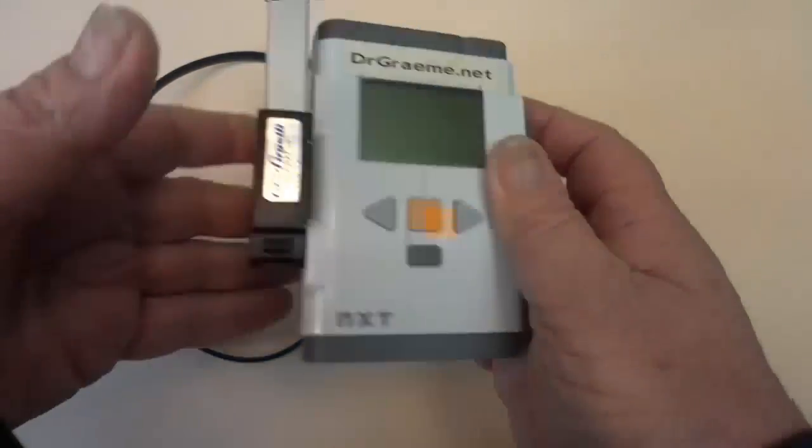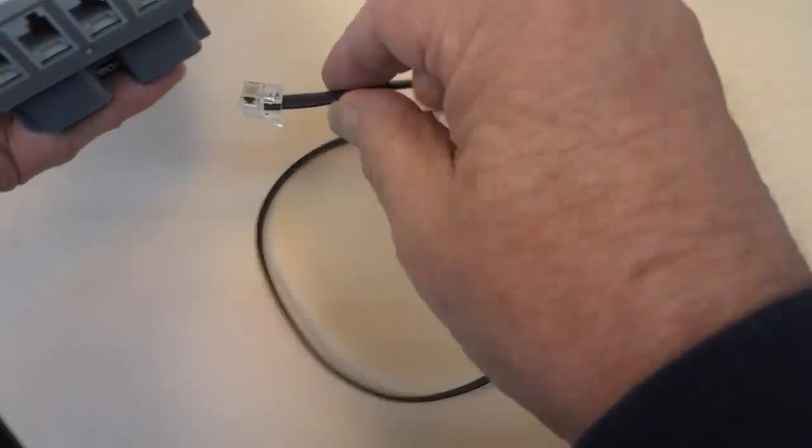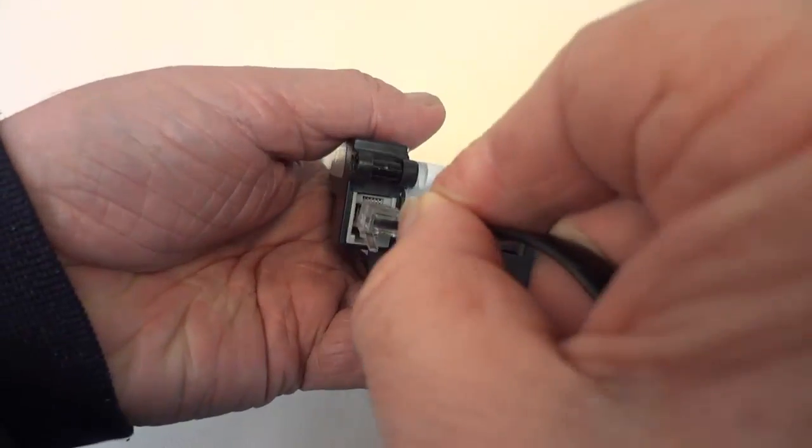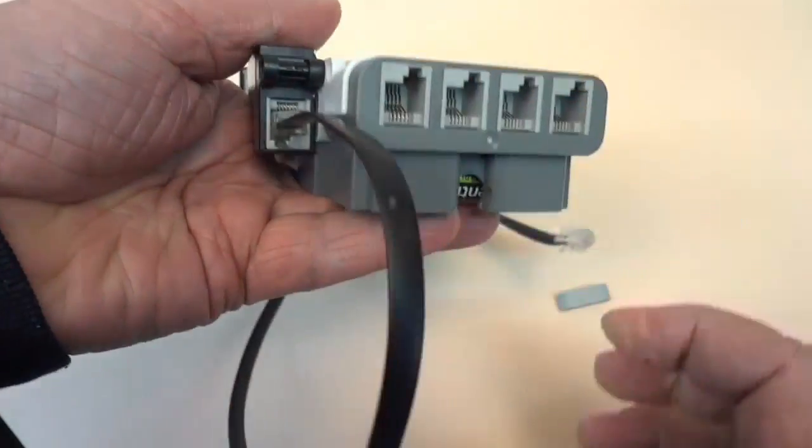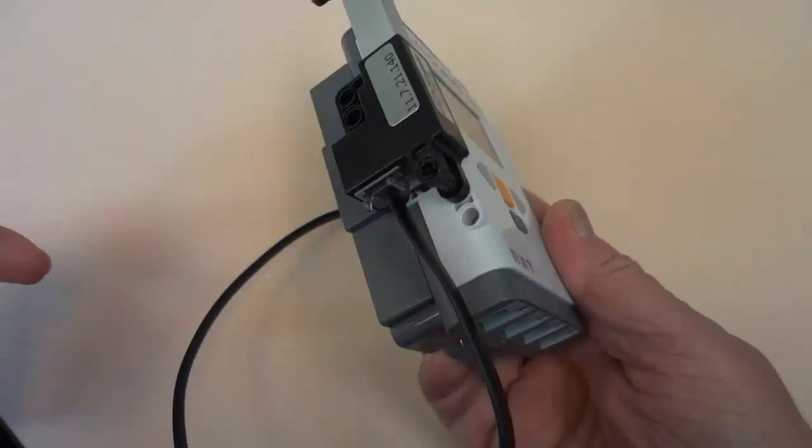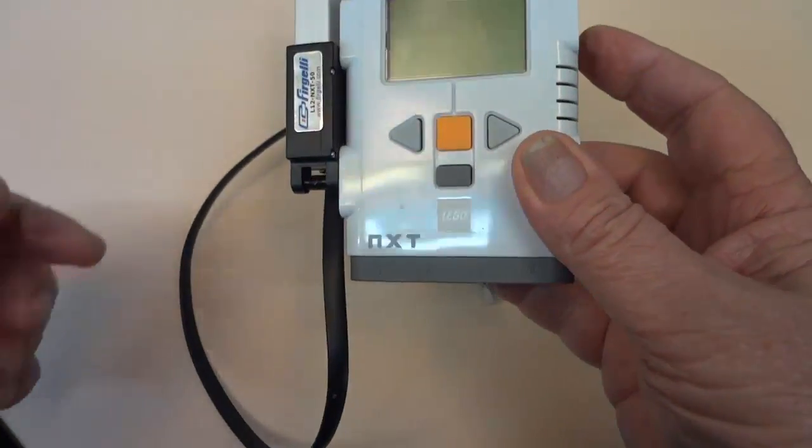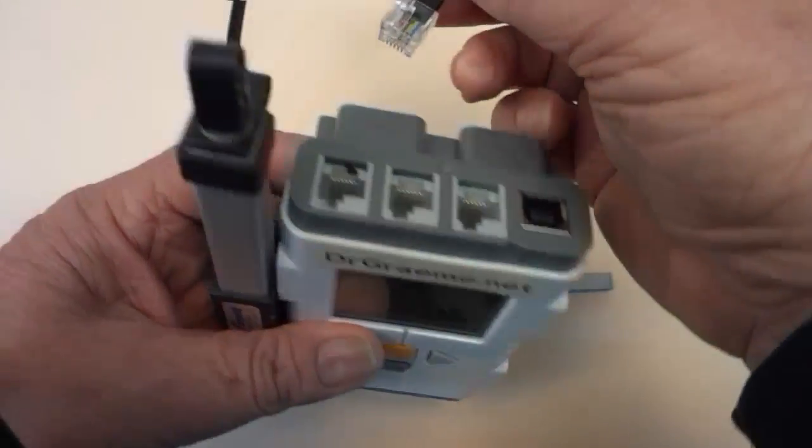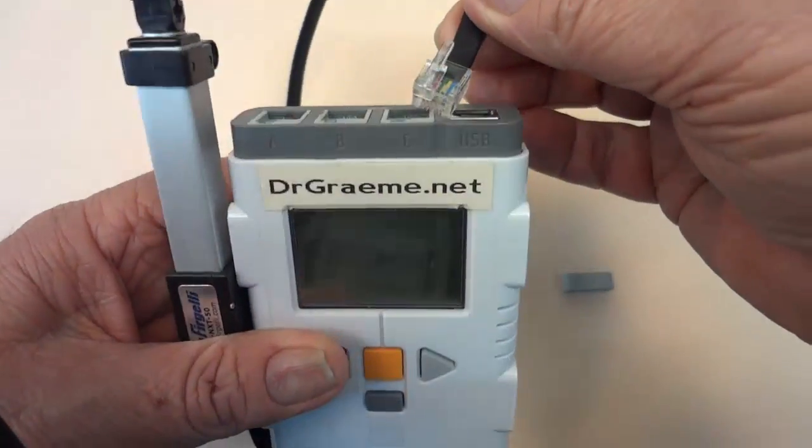Fairly straightforward. The cable goes into the back of the NXT sensor like that. And we can put it into any of these three motor ports up the top.